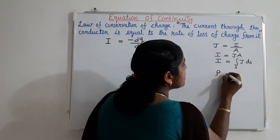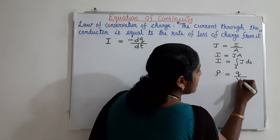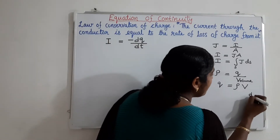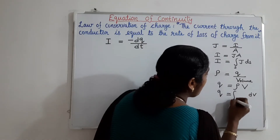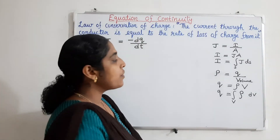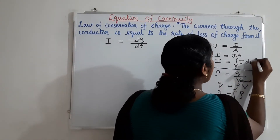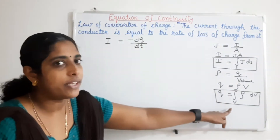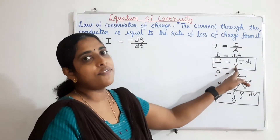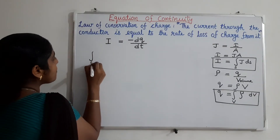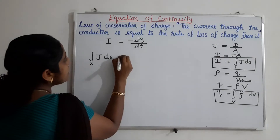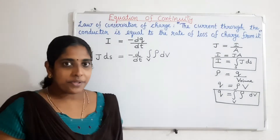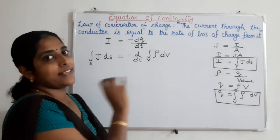Similarly, charge density ρ equals charge Q divided by volume V, so Q can be written as charge density ρ times volume V. For a small volume dV, the total charge is the volume integral of the charge density over volume dV. So we can write current as the surface integral of current density and charge as the volume integral of charge density. Therefore, the law becomes: surface integral of J · dS = −d/dt of the volume integral of charge density ρ.